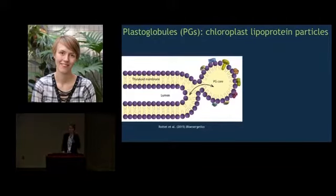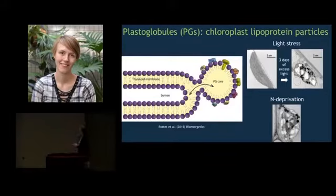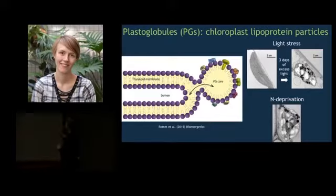So what do they do? They play a variety of roles in plastid biogenesis, senescence, homeostasis, and abiotic stress response. As you can see here in these pictures of the chloroplasts, they're these little tiny dark spots and they swell up in response to light stress. They've also been shown to respond to nitrogen deprivation.